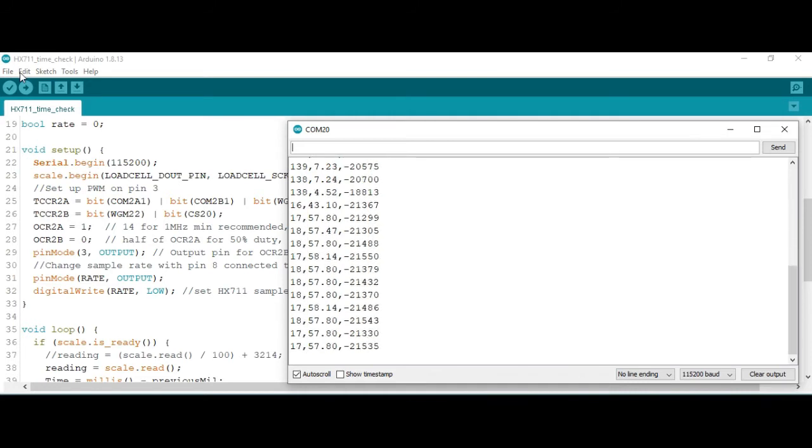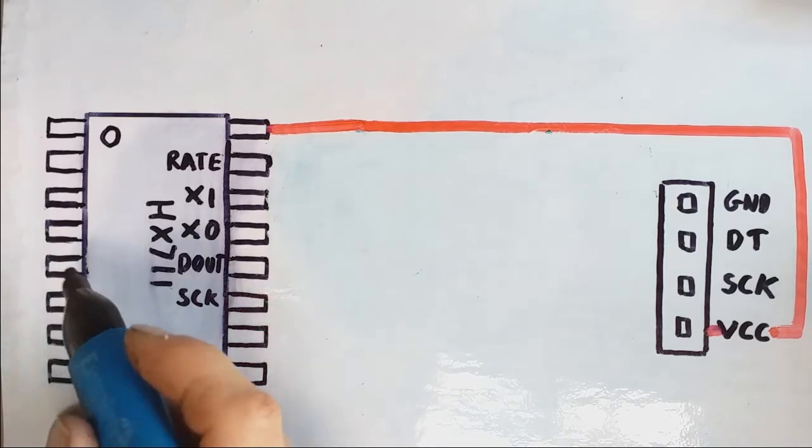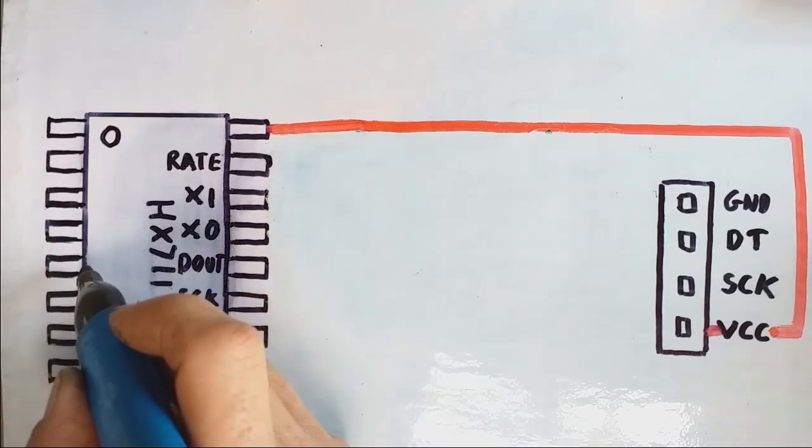And finally an additional note for anyone using the exact board that I've shown in this video, because there is actually a missing ground connection on that type of board. Now this pin 5 here is known as analog ground, and it turns out it's not connected in any way to this ground here.